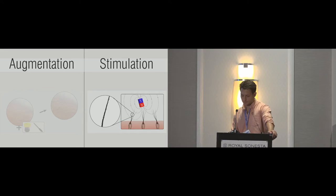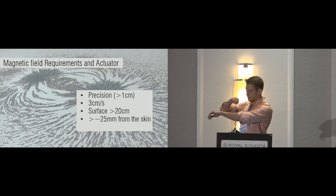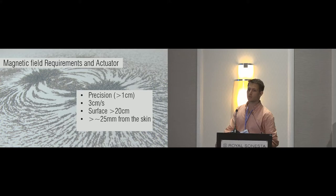Once we have this hair augmented, now how can we stimulate it? This hair now reacts to magnetic field. For the study we wanted to perform, we set up certain requirements on the magnetic field. We wanted to have a precise magnetic field of about one centimeter so we can move it around. We target three centimeters per second, which is the speed related to C-tactile afferents. We wanted a surface capable to stimulate all the forearm, about 20 to 30 centimeters. And we didn't want this actuator to touch the skin or hair, so we placed it at about 25 millimeters.